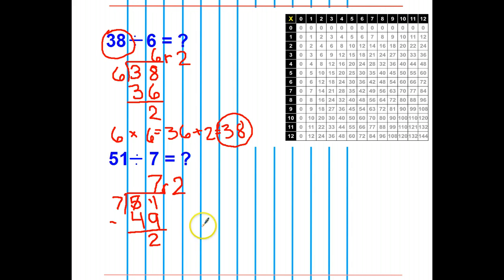Let's check it. I'll take my quotient, multiply it times my divisor. 7 times 7 is 49. Add my remainder back in. My solution for that is 51, which matches that. My solution is 7 with a remainder of 2.